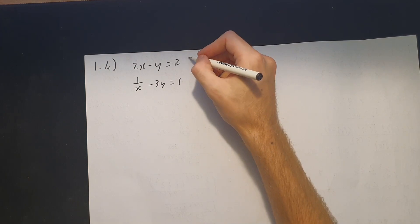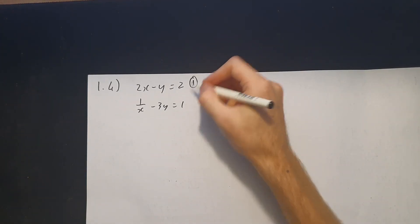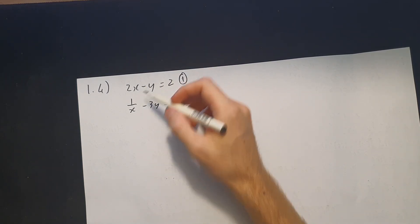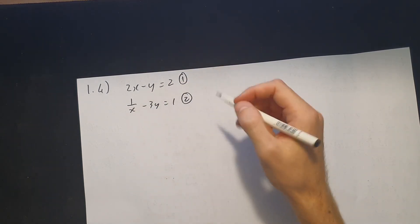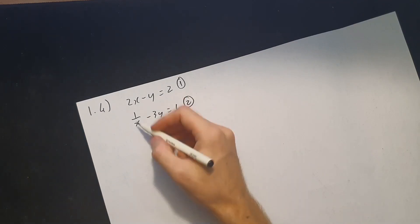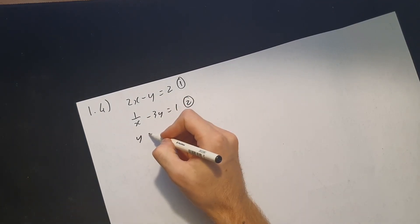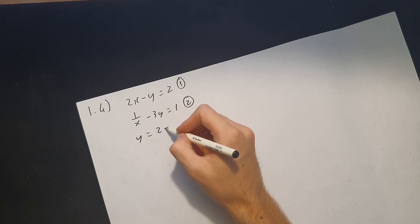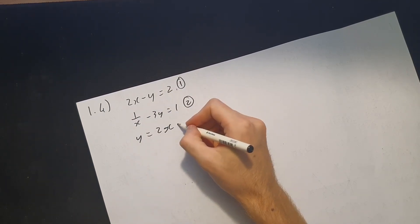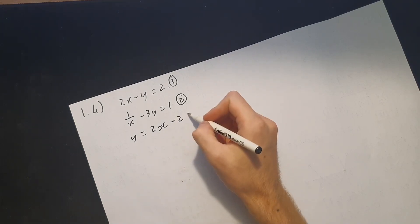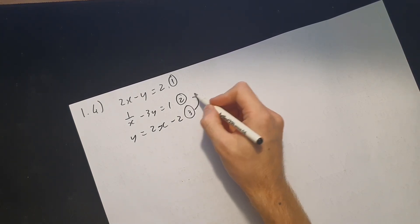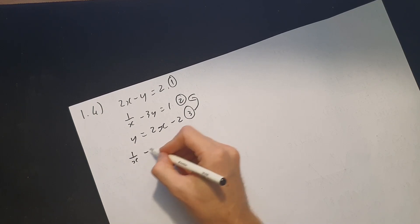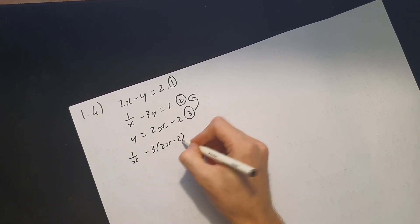Now let's look at 1.4 — solving simultaneously. Use the less complicated equation to create your subject. I'll use equation 1, manipulating it to get y on its own: y = 2x − 2. Now substitute into equation 2 wherever I see y: 1/x − 3(2x − 2) = 1.